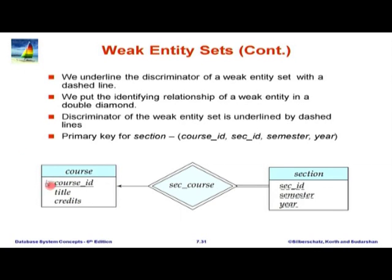Course is a strong entity set — a strong entity set is one which is not weak. Course has a primary key course ID and a couple of attributes. Section we decided to make a weak entity set and relate it to course. One alternative would have been to give a section ID which is a globally unique integer. Instead, section ID here has a dashed underline, meaning it is not a full primary key by itself but is a discriminator attribute. The section is uniquely identified by the course ID of the identifying course plus section ID, semester, and year — these four things together form a primary key.